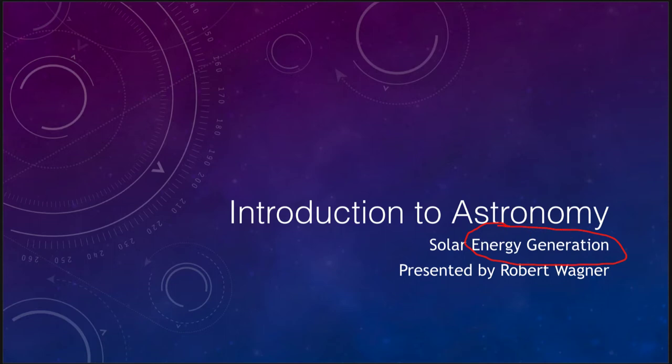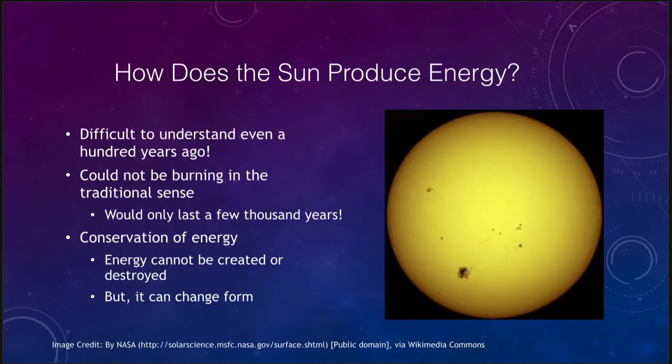So how does the Sun produce the massive amounts of energy that it is able to put out into space? Let's take a look and start off with some of the early ideas. Even just a hundred years ago this was something hard to understand. How was the Sun putting out all of this energy?